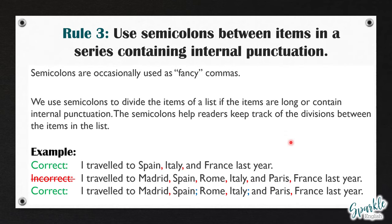Now let's look at rule three. We use semicolons between items in a series containing internal punctuation. Semicolons are occasionally used like fancy commas. We use semicolons to divide the items of a list if the items are long or contain internal punctuation. The semicolons help readers keep track of the divisions between the items in the list. Normally when we have a list, we use a comma — for example, 'I went shopping and I bought bread, cheese, and coffee.'